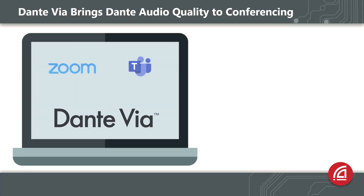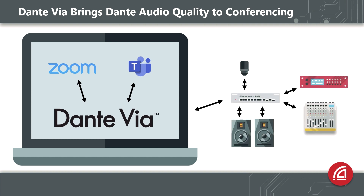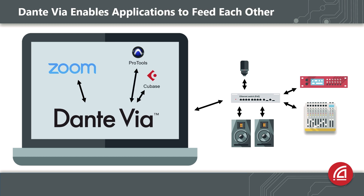By using DanteVIA, you can dramatically improve conferencing audio quality using Dante products you may already have or can get affordably. DanteVIA also allows you to route audio between applications on the computer — for example, we could share audio production software like Pro Tools, Cubase, or Nuendo directly to a Zoom or Microsoft Teams meeting.